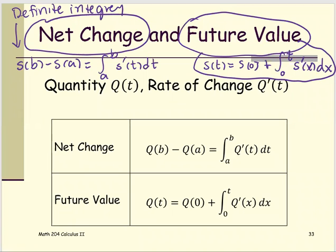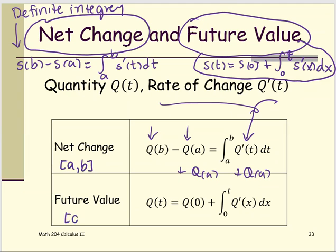If we apply to another application, the net change Q as a quantity and the rate option is Q prime. Q at B minus Q at A is the definite integral from A to B of the Q prime or the rate of change. When you add Q of A to both sides, you obtain another formula that represents the future value, using the interval zero to T.